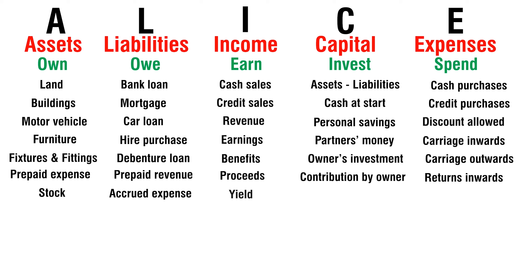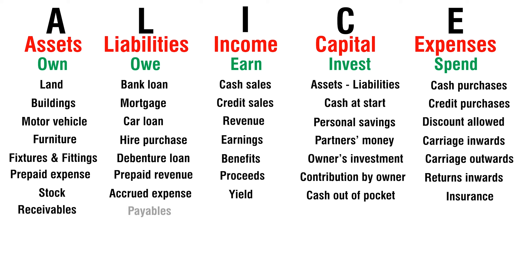Yield — earn. Cash out of pocket — invest. Insurance — spend. Receivables — own. Payables — owe. Takings — earn. Share capital — invest. Rent — spend.